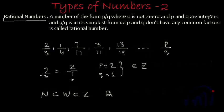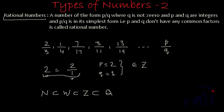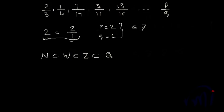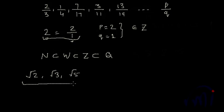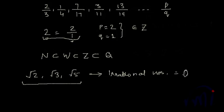As we have seen, we can represent all integers in the form of rational numbers, which means the set of integers is actually a subset of rational numbers. Then we have the set of irrational numbers — numbers like square root of 2, square root of 3, or square root of 5. These are numbers which cannot be represented in the form P by Q, and that is why we call them irrational numbers. This set is represented as Q dash.